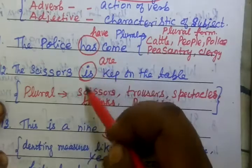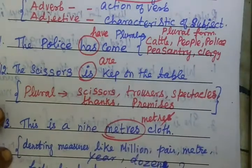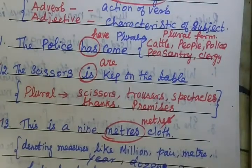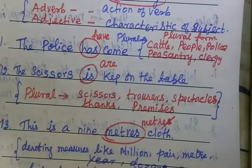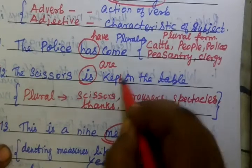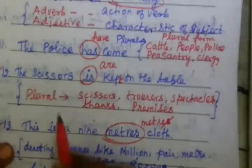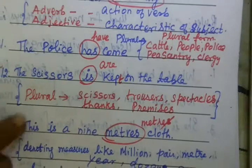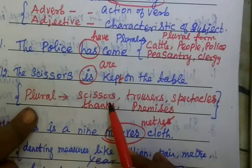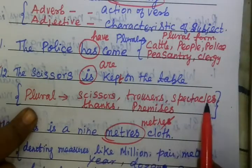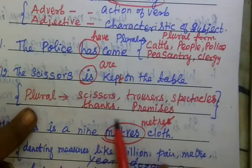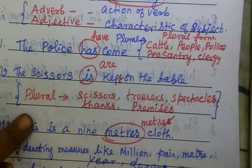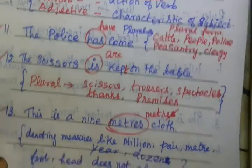Now: the scissors are kept on the table. Scissors takes a plural verb, so you are using 'are'.